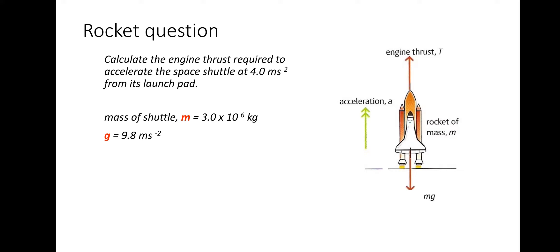So what I'm going to do is initially show you how to do this type of question — the rocket question. We're going to calculate the engine thrust required to accelerate the space shuttle at 4 meters per second squared from its launch pad. We're given the mass of the shuttle and gravitational field strength; we're just going to use 9.81.